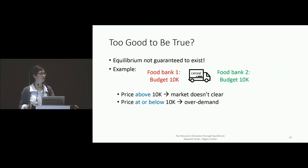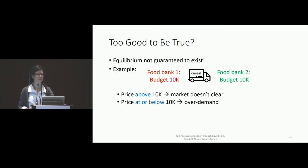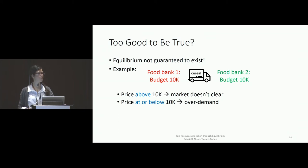It's almost too good to be true — and it is. Here's an example of a simple market where equilibrium doesn't exist. Say we have one item — one truckload of cereal — and two food banks with the same budget of 10K. If you price this item above 10K, the market doesn't clear because nobody has enough money to buy it. If you price it at or below 10K, both will want to buy it and you have over-demand. There is no way to price this item to get an equilibrium.